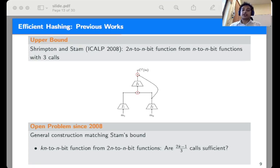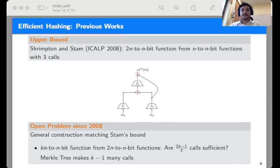In particular, we did not know whether to construct kn to n-bit function from 2n to n-bit functions, (2k-1)/3 many calls are sufficient to achieve collision resistance. And to put matters in perspective, we recall that the Merkle tree makes k-1 many calls.